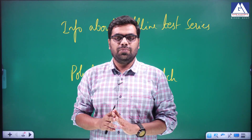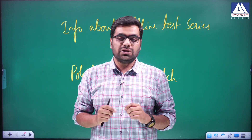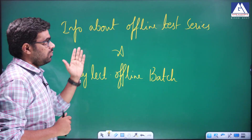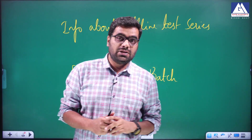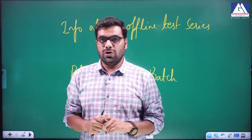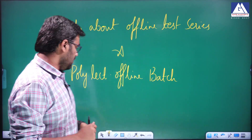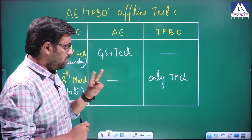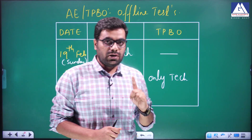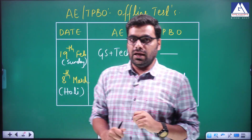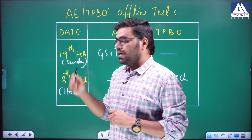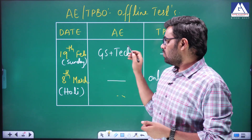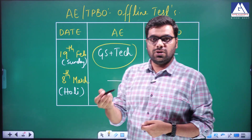AW is the best job. This is about the offline details — town planning and AE. AE is an example of offline test. AE and town planning building overseas — only two test methods are conducted. AE offline and town planning offline. AE offline is going to be conducted on 19th February, that is Sunday. AE — 19th — GS plus technical. Morning GS and evening technical.